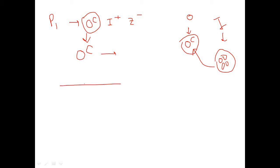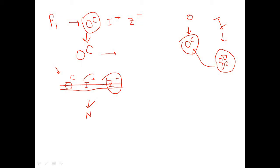When the repressor cannot bind to this operator, RNA polymerase can continuously bind to this OC region. RNA polymerase can easily bind because the repressor is not blocking it, and it can catalyze the expression of the lac operon genes. However, Z is minus, meaning the gene for beta-galactosidase is not present.